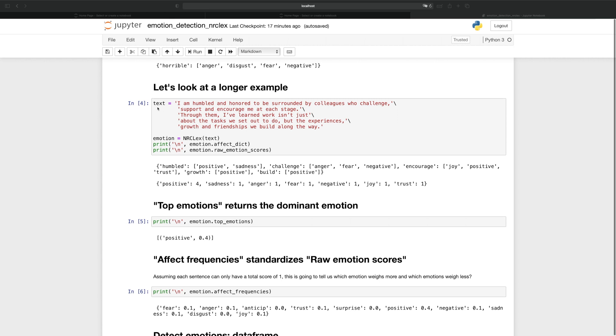Now let's look at a longer example. We have this post that I found on LinkedIn. It goes, I'm humbled and honored to be surrounded by colleagues who challenge, support, and encourage me at each stage. This time we see that multiple words are detected by NRC-Lex. For example, humbled is both positive and sad at the same time. Challenge invokes the sense of anger, fear, and it's negative. In this case, it's a false positive because the author used the word challenge in a good way. Overall, we can use the method raw emotion score to summarize that the sentence contained four words that are positive, one word that is sad, one word that is angry, etc.